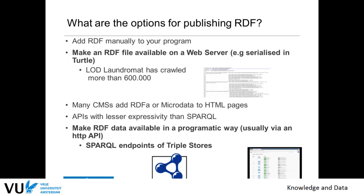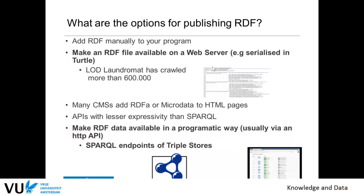We will look at the second big way of publishing RDF data, and that is to use an HTTP API on a database, usually called a SPARQL endpoint or a triple store. The first option is that we literally have Turtle files somewhere for other people to download. The second thing is that we have a database running to which people can write expressive queries and get the results back via HTTP. So the two options are file publishing and triple store publishing, and you will do both.